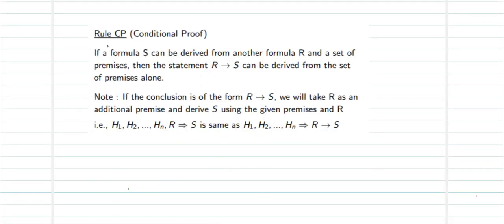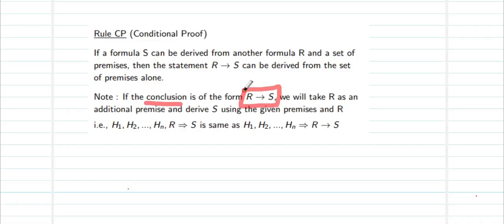Definition: what is meant by rule CP or conditional proof? If a formula S can be derived from another formula R under a set of premises, then the statement 'if R then S' can be derived from the set of premises alone. Note that if you have a conclusion which is going to be of the format 'if R then S', you call this kind of statement a conditional statement.